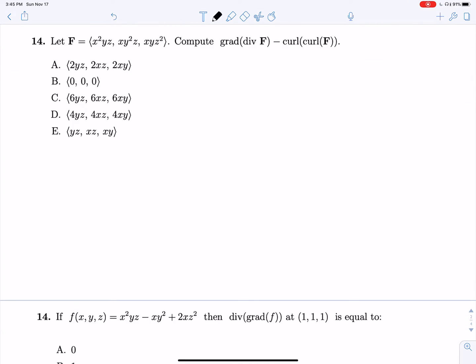Okay, we're computing the gradient of the divergence of F minus the curl of the curl of F. Okay, this one's a ton of fun, so let's get into it. The divergence of F is going to be del dot F, and so that's going to end up being 2xyz plus 2xyz plus 2xyz, which is 6xyz.